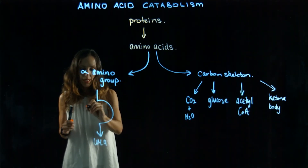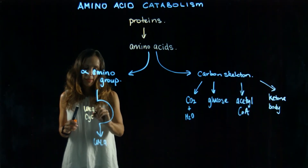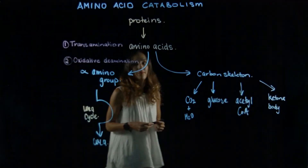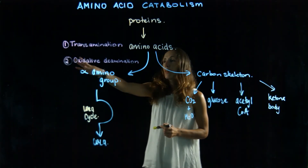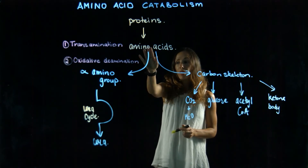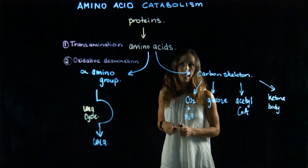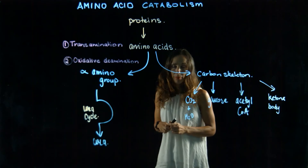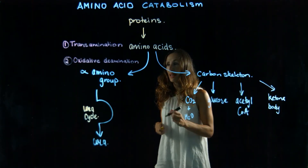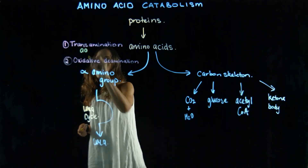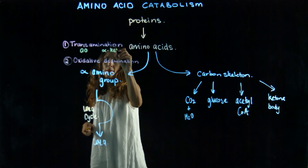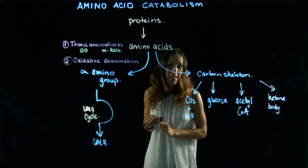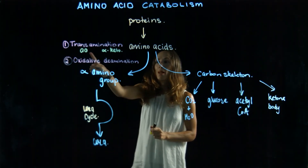Here we have our urea cycle — this is a way that the body can eliminate the extra nitrogen that's not needed. There are two steps involved in removing the alpha amino group from an amino acid that's to be degraded. The first step is transamination, where we take the alpha amino group from an amino acid and it's transferred to an alpha keto acid. That means our amino acid becomes an alpha keto acid, and our alpha keto acid becomes an amino acid.